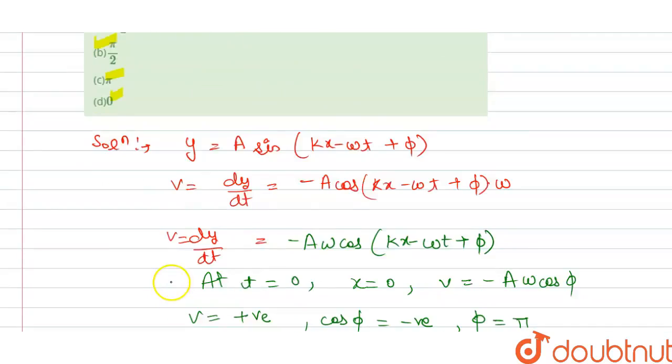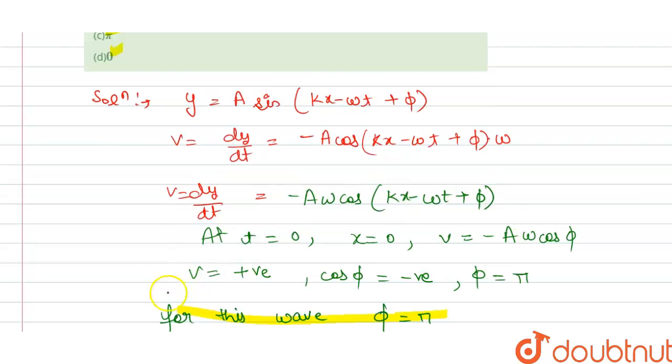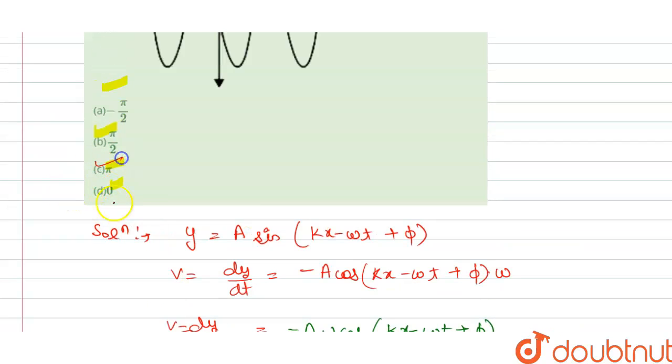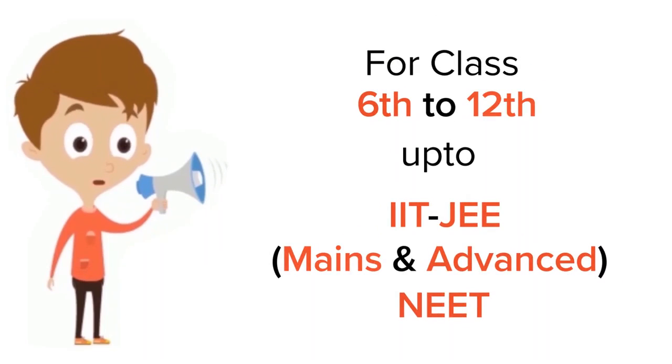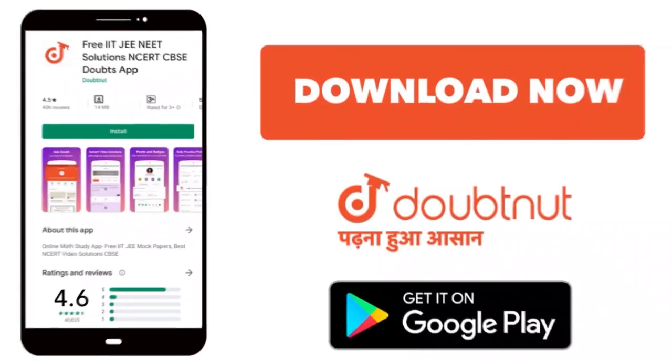From this we get the phase is π here. So for this wave, phase is π. This is our answer for the question. Now we check which option is correct here, so our option C is correct. Thank you. For class 6-12, IIT, JEE and NEET level, trusted by more than 5 crore students, download Doubtnet app today.